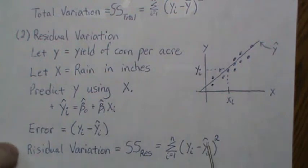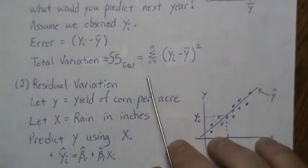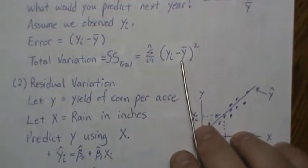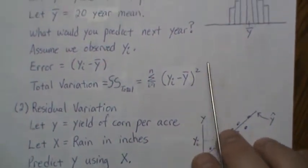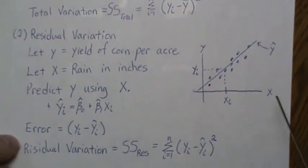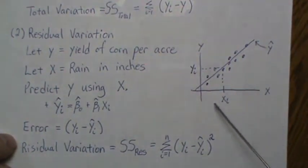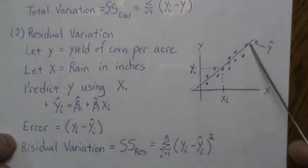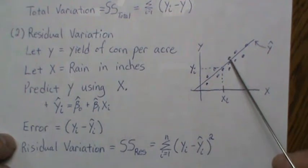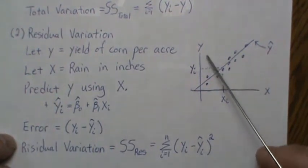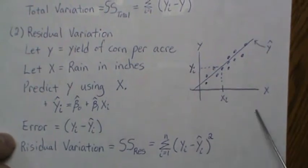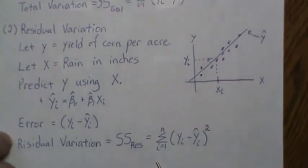The sum of squares residual — sometimes called sum of squares error — is the sum of squared differences between observed and predicted values using the regression line. The sum of squares total is the same concept but without the regression line. Notice that Y_i minus the predicted value (this vertical variation) is actually much smaller than the total error, so the residual is smaller than the total.